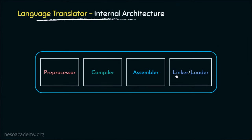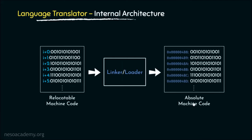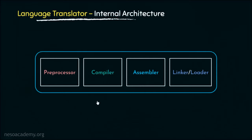Finally, the last one is the linker and loader. These generate the absolute machine code, that is the executable machine code. This is basically the process which has been loaded into the RAM and is ready for execution. These are some sequential absolute addresses. So this is the underlying architecture of the C language translator.